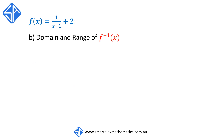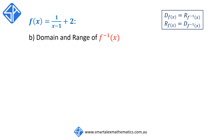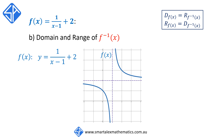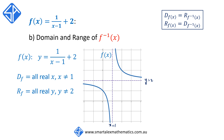To find the domain and range of the inverse function f to the negative 1 of x, we again use the property that the domain and range interchange. For f of x equal to 1 over x minus 1 plus 2, we have a hyperbola with asymptotes at x equals 1 and y equals 2. So the domain of f of x is all real x except x cannot equal 1, and the range is all real y except y cannot equal 2.